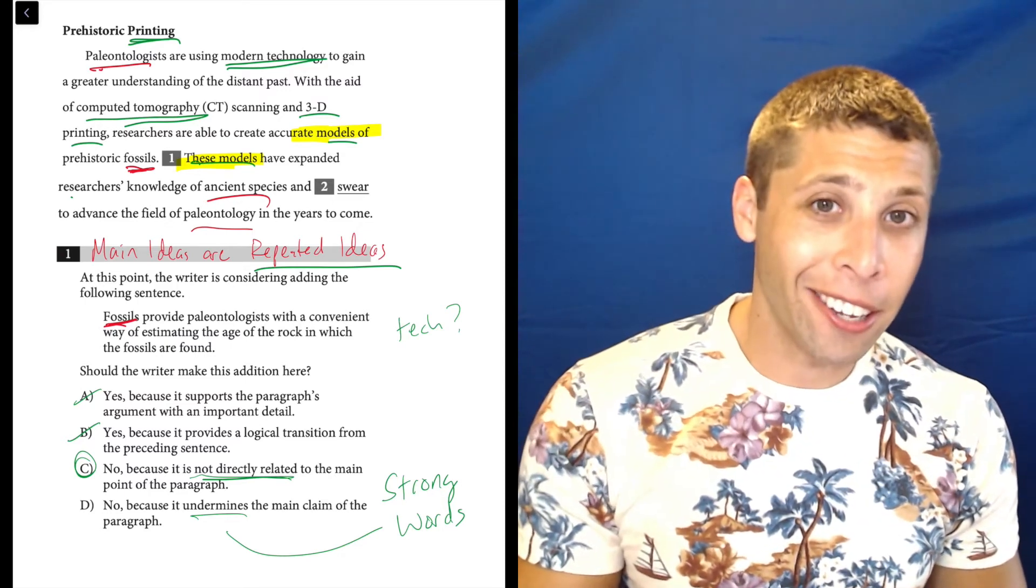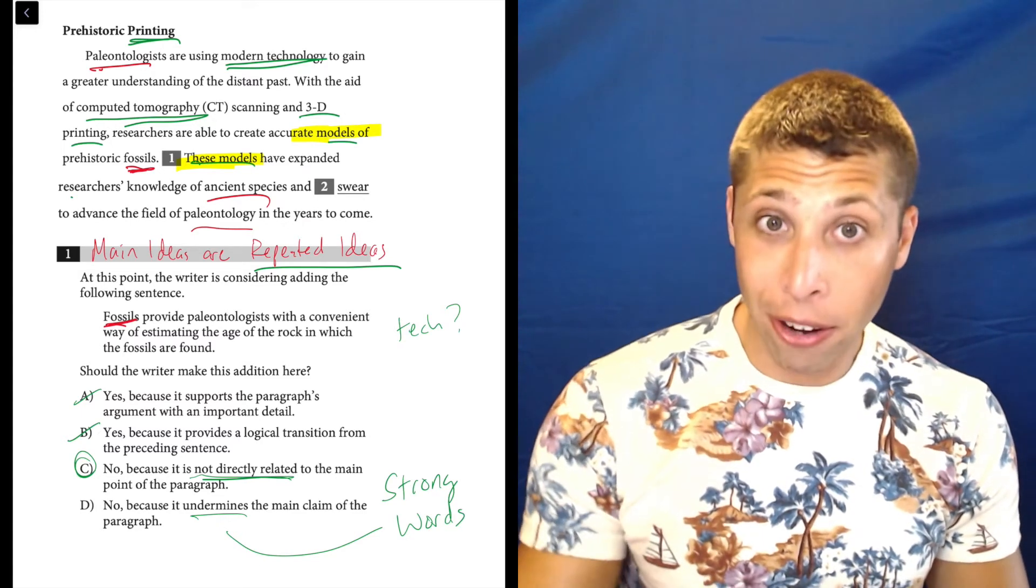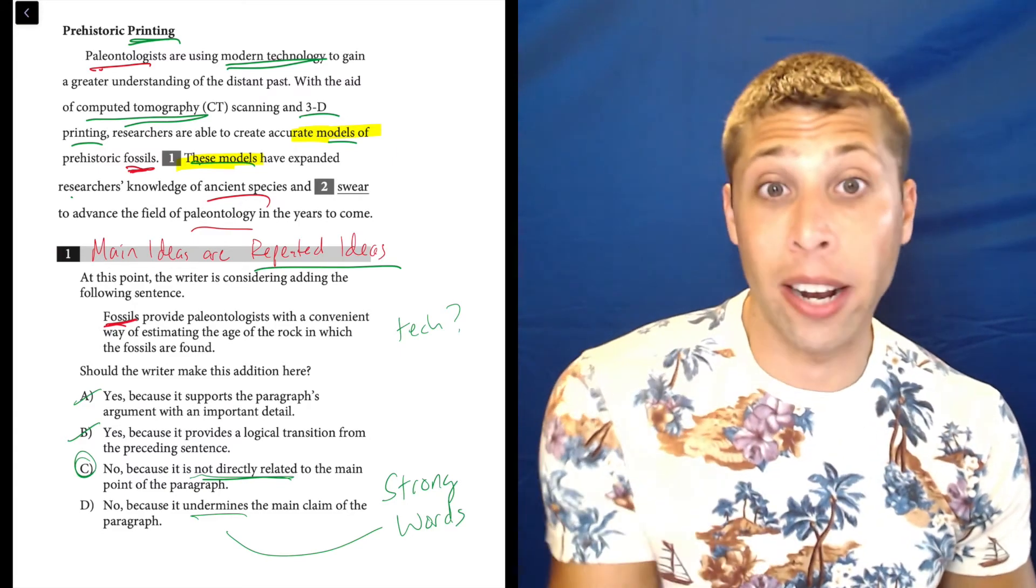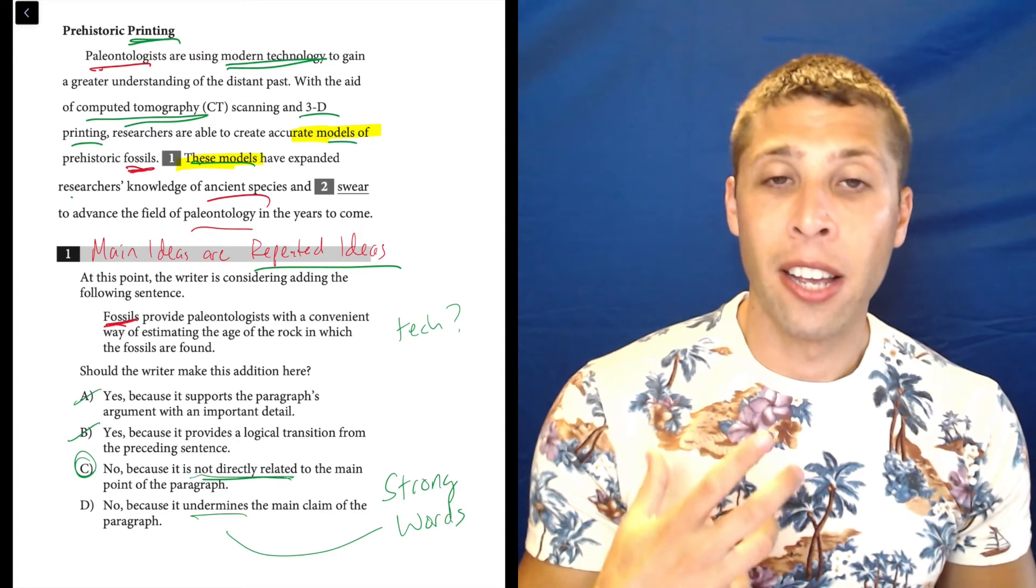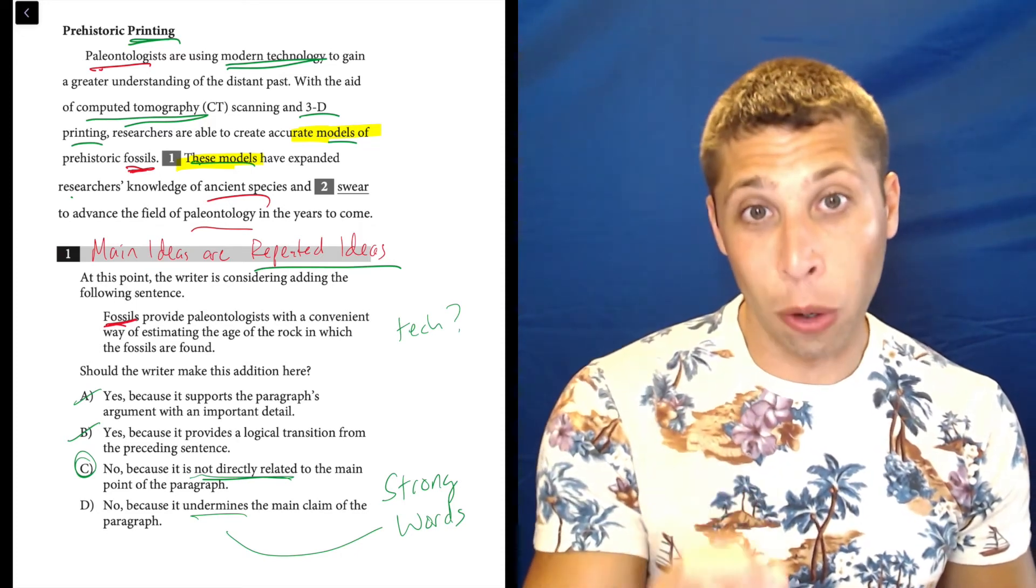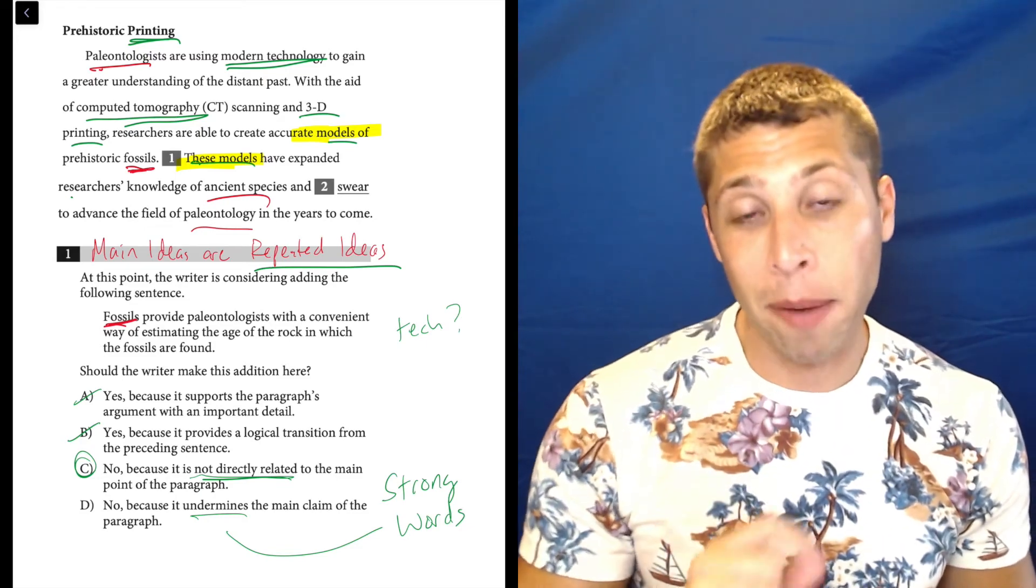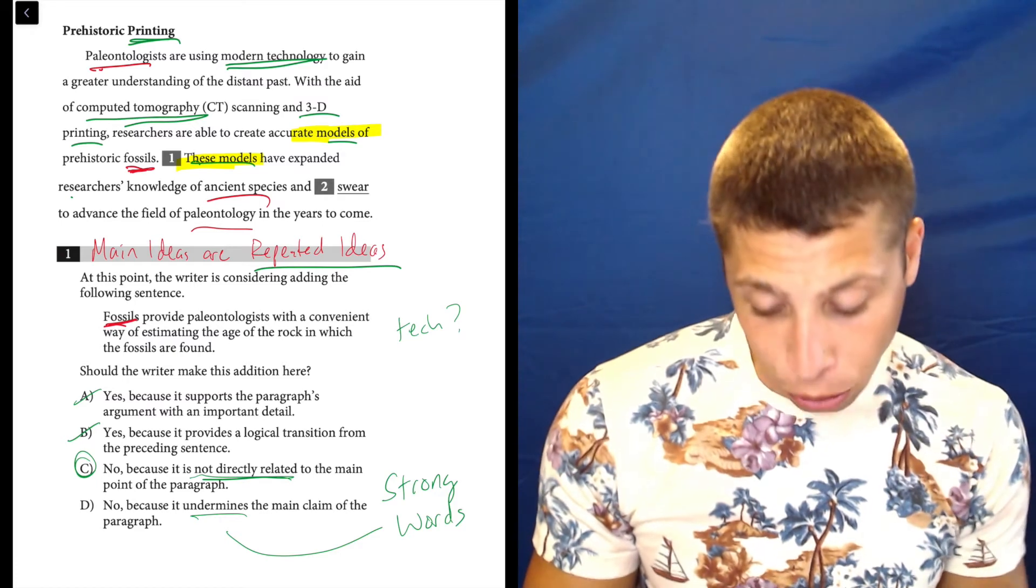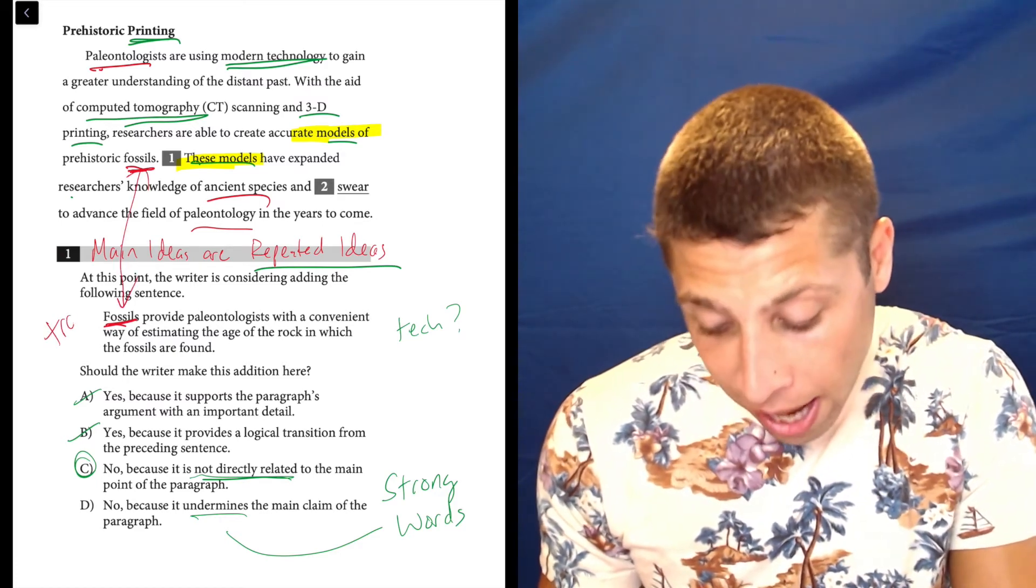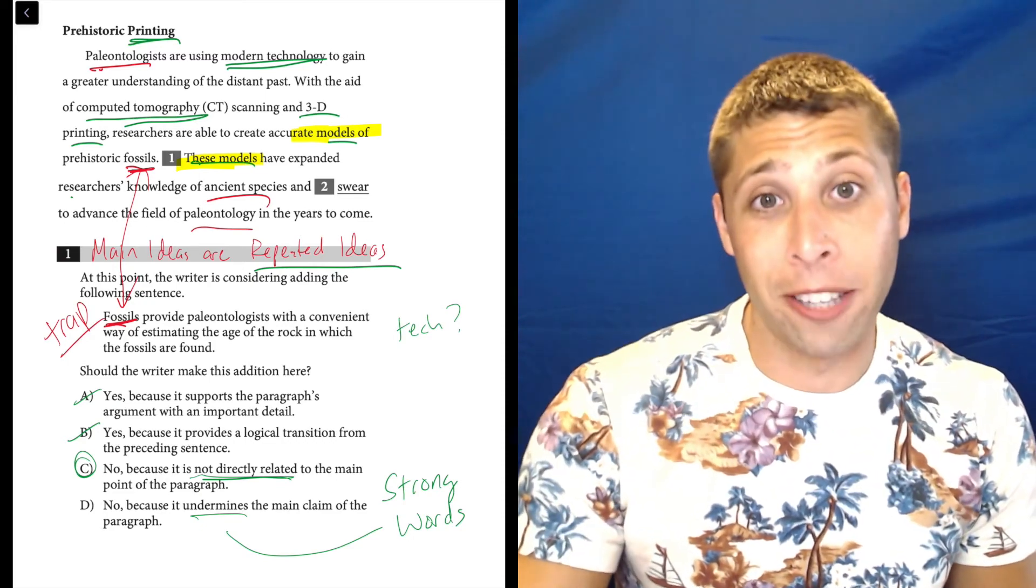So hopefully this all makes sense now. And this is a good question to kind of think about as you do other questions throughout this section and throughout any writing section really. Don't just look at the most immediate words, look at the big picture, see what's repeated throughout a paragraph to find main ideas. They love this little trick, this trick here of fossils to fossils. That is not a coincidence. And if you know that those things exist, you're less likely to fall for those kinds of traps.